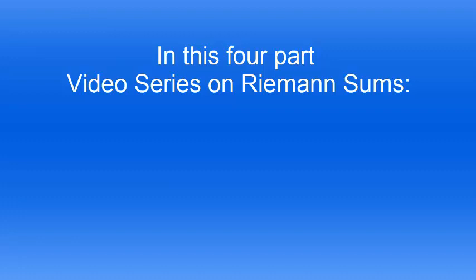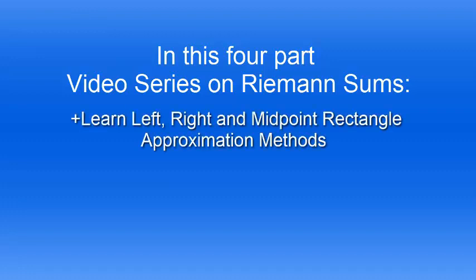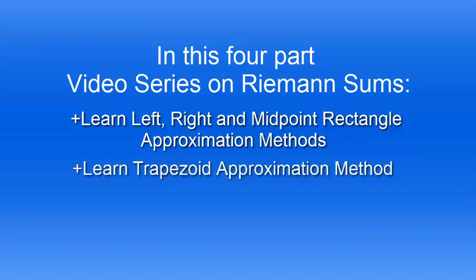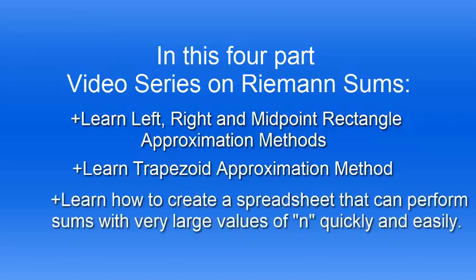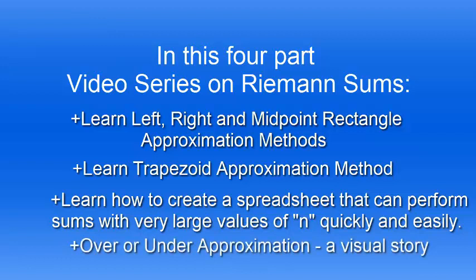In this four-part video series on Riemann sums, we'll learn about the left, right, and midpoint rectangle approximation methods, as well as how to calculate the trapezoid approximation. The third video will show you how to create a spreadsheet that can perform sums with very large values of n quickly and easily, giving accurate approximations. The final video will go through a visualization to help you understand whether approximations were under or over approximations, and what characteristic of the function caused them to be such.